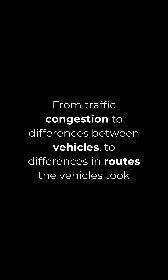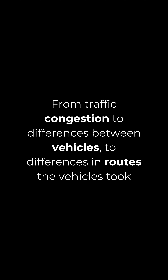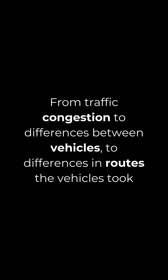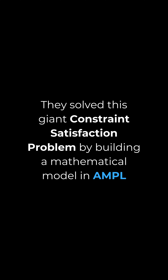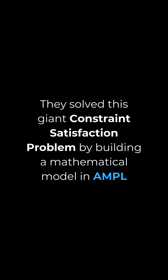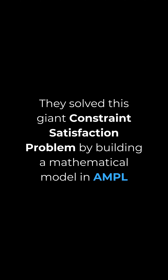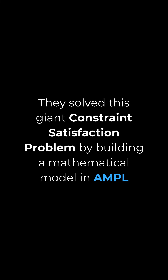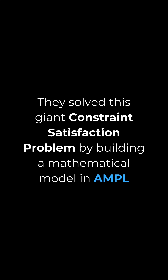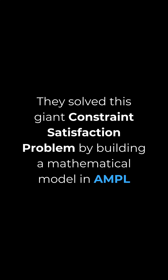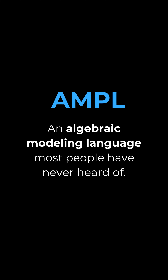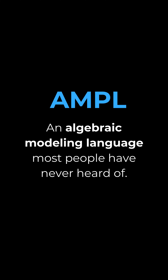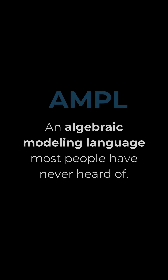From traffic congestion, to differences between vehicles, to differences in routes that the vehicles took. They solved this giant constraint satisfaction problem by building a mathematical model in AMPL, an algebraic modeling language most people have never heard of.